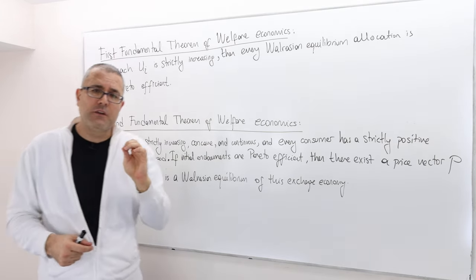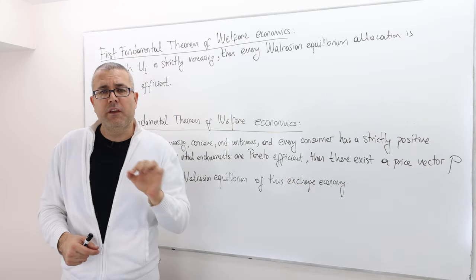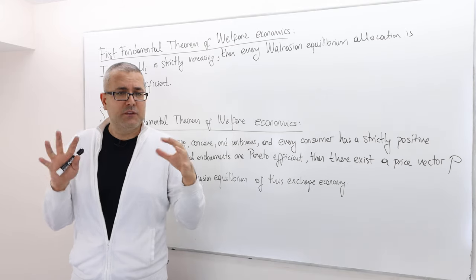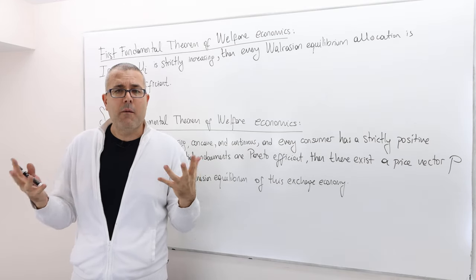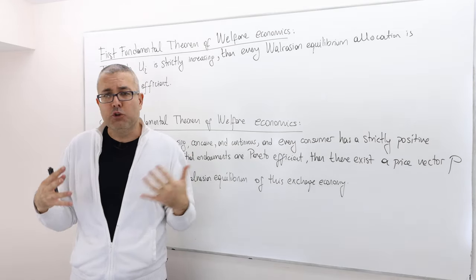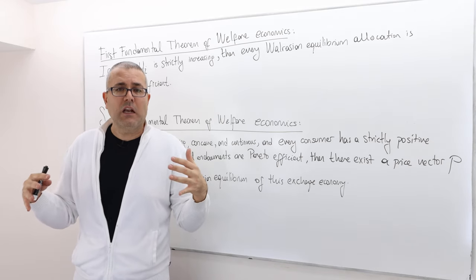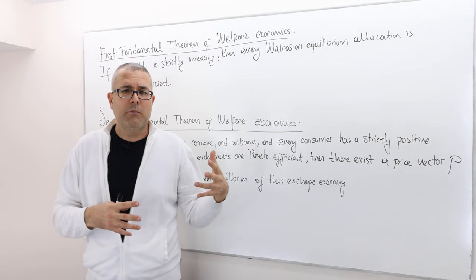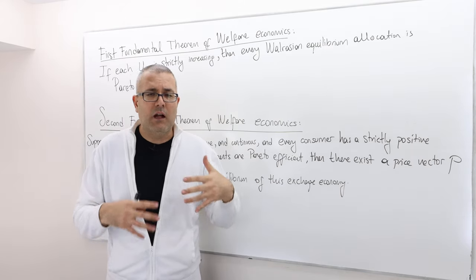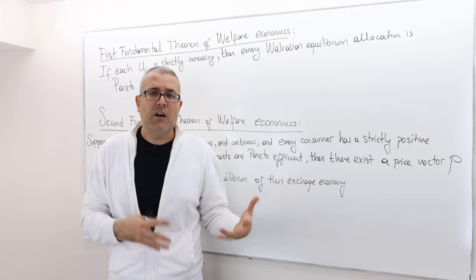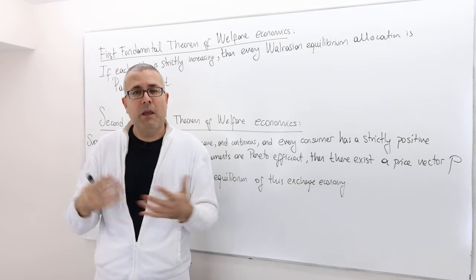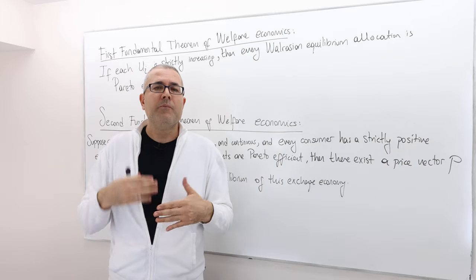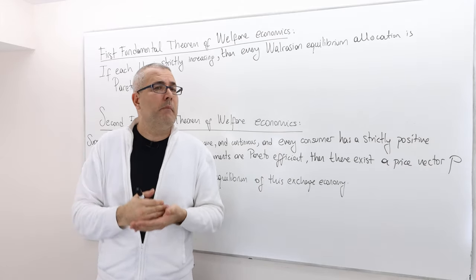This is a very important theorem, especially if you're solving a numerical example. You may end up in a situation where you can't find a Walrasian equilibrium price where the markets clear. So you may wonder: am I doing something wrong mathematically or algebraically, or is it because there is no Walrasian equilibrium in this market? Well, it may not be the former but the latter — the Walrasian equilibrium outcome may not even exist.